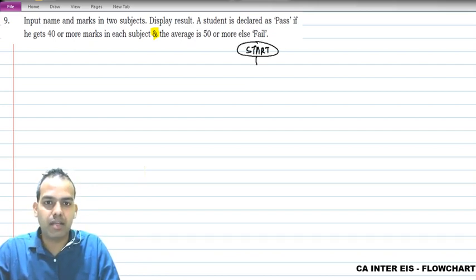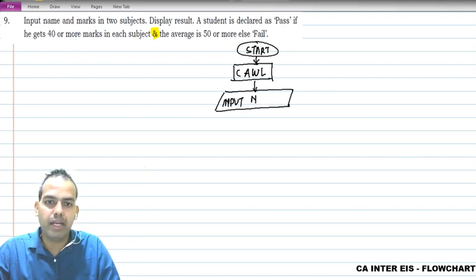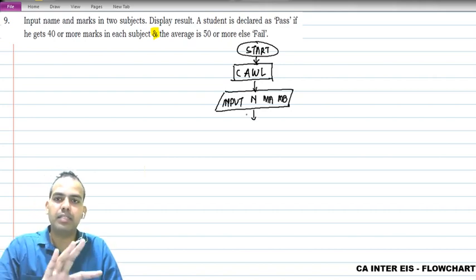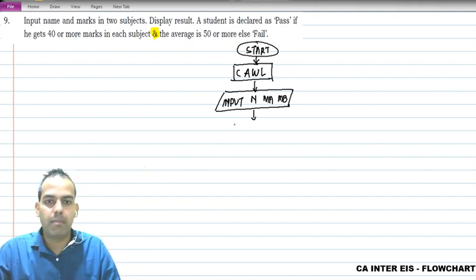Now what was this button called? Clear all working location, perfect. Now tell me how - this was input button, yes, perfectly set by you. Name you remember, MA and we can have MB - that's marks in A subject, marks in B subject. Two subjects are there, perfect.